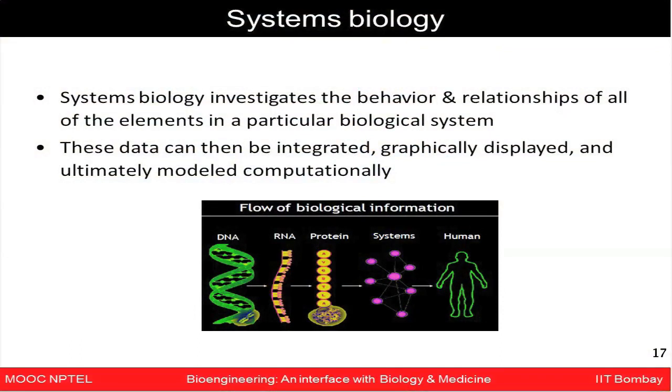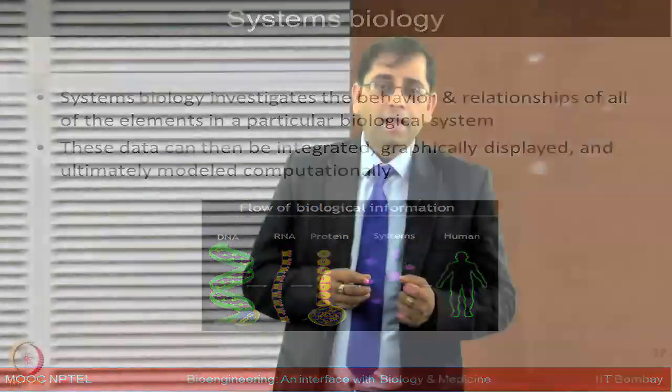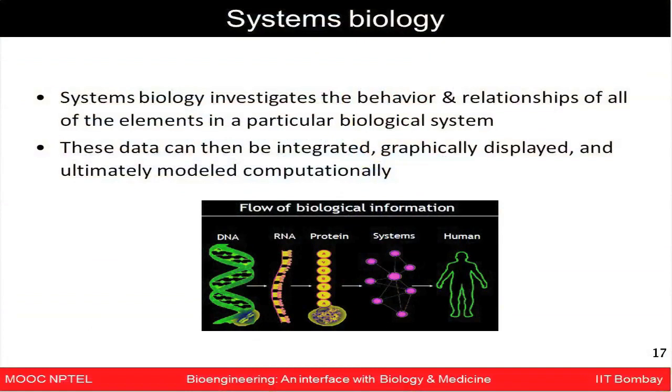All these omics technologies generate big data in a very short time and aim towards looking at entire systems. However, if you are looking at only one part of the picture — only the genes, or only the RNA, or the proteins — you may not get the entire picture of what is happening in the physiological system. Systems biology is a field which investigates the behavior and relationships of all elements of a particular biological system, looking for integration of data which could then be computationally modeled to enhance understanding of complex physiological systems.